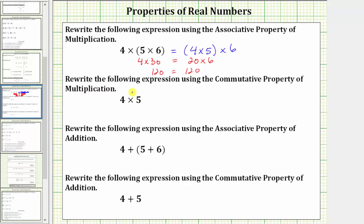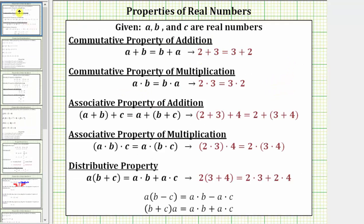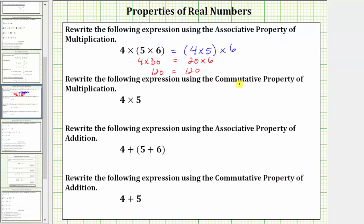Next, we are asked to rewrite the following expression using the commutative property of multiplication. We are given the expression four times five. The commutative property of multiplication is A times B equals B times A. It involves changing the order of a product. Applying the commutative property, four times five equals five times four. Notice both products are equal to 20.